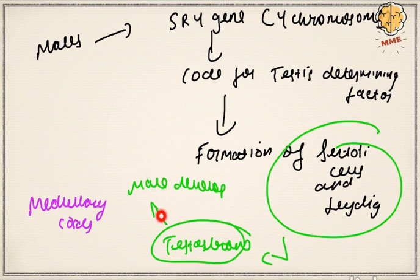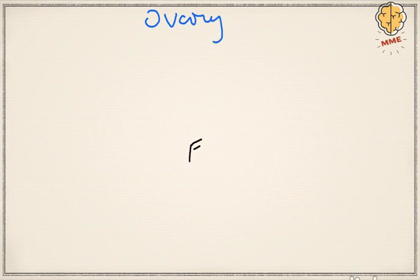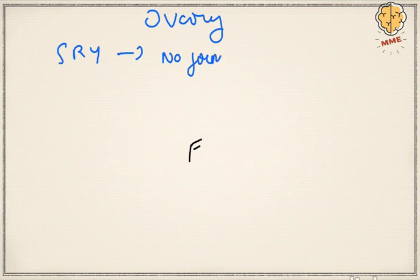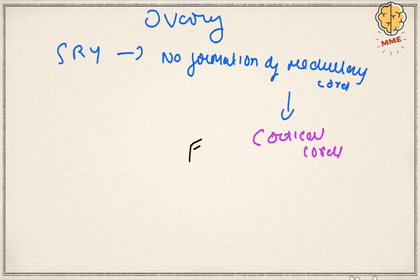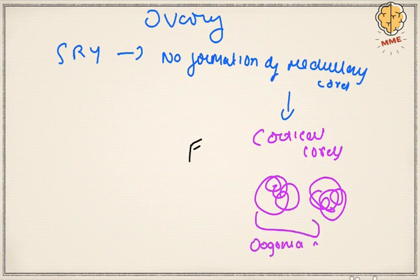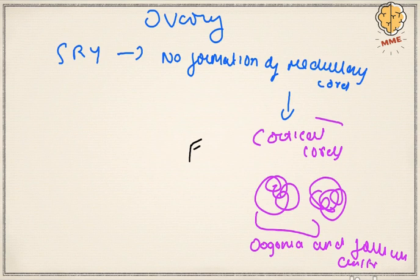Presence of the SRY gene leads to formation of medullary cords, from which testosterone develops during puberty, enabling male development. In females, the SRY gene is absent, so no medullary cords form. Instead, cortical cords originate in females, which form clusters that later give rise to oogonia and follicular cells. This distinction — cortical cords in females and medullary cords in males — is very important.